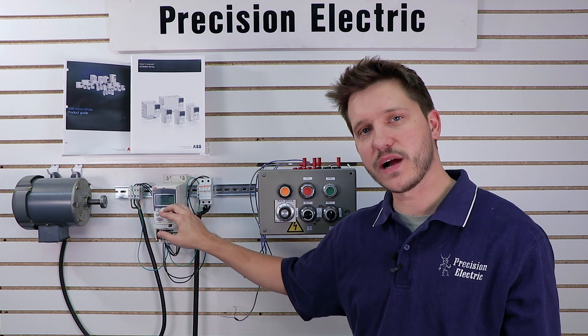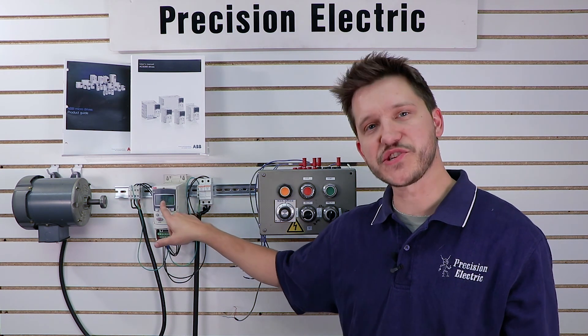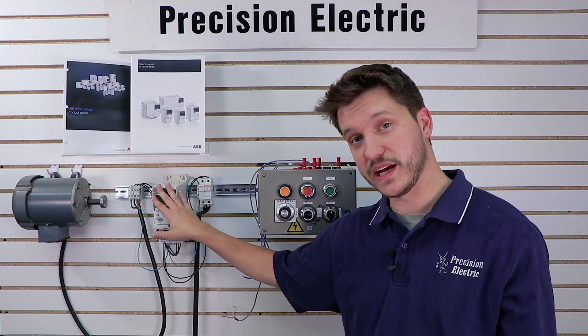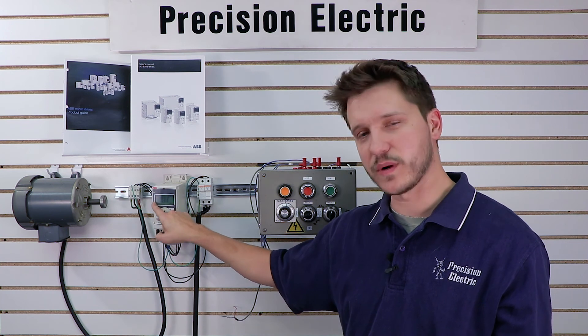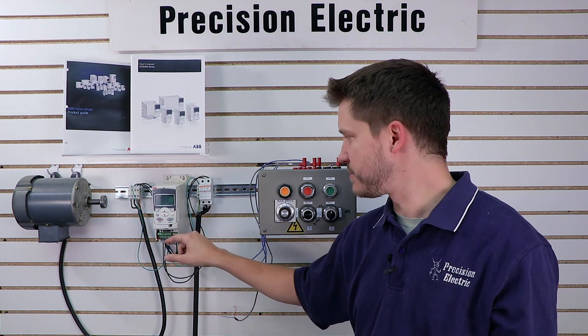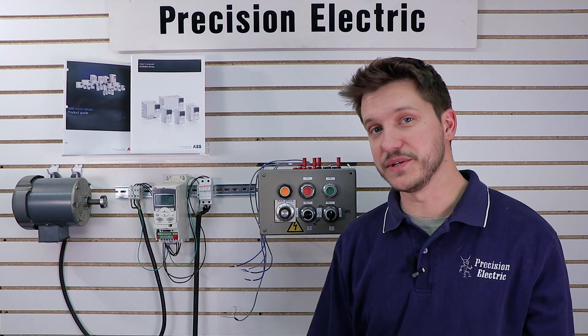And that particular word means that the drive is in local keypad control. And when we go over later on wiring your actual start, stop, and speed to the terminal strip, we're going to be switching between local keypad control and remote push button and speed control. So that local remote comes into play a little bit later. But for basic commissioning on a keypad, that's really all there is to it.